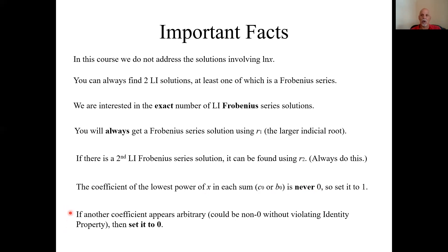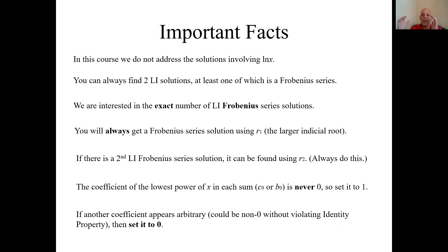Here's a nuanced point. If another coefficient appears arbitrary — and by that I mean it could be any value because the rest of the term forces the expression to zero no matter what that coefficient is — then we're going to set it to zero. We get those terms from using the identity property: if the identity property says the specific c sub n you're looking for could be anything, that's what I mean by it appearing to be arbitrary. In that case, we're going to force it to be zero. I'll try to explain this a little later.